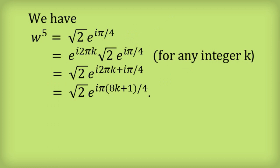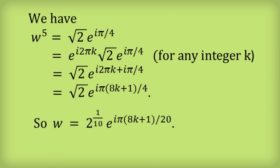So let's take the square root of both sides, and we get w is equal to 2 to the power of 1 tenth, e to the i pi times 8k plus 1, divided by 20.